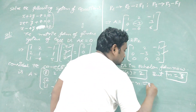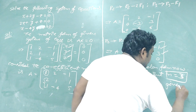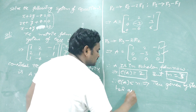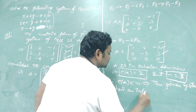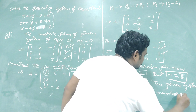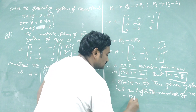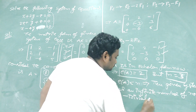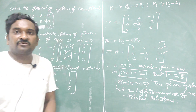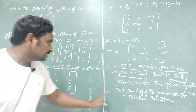So what is the conclusion? From the procedure, if rank of A is less than n, then the given system has an infinite number of solutions — specifically, an infinite number of non-zero solutions, otherwise called non-trivial solutions.